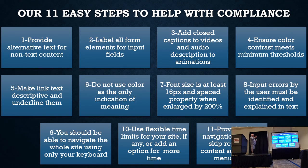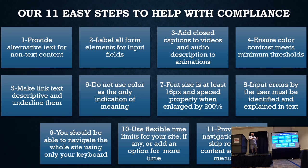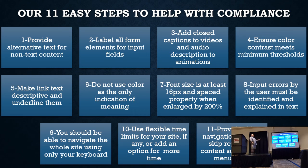Use closed captions on videos, audio descriptions, and animations — we talked about that. Ensure your color contrast meets minimum threshold — we talked about that: 4.5-to-1 or 3-to-1 for large text. Make your link text descriptive and underline them. This has to do with not making color the only means of conveying information. If an individual is colorblind and you've just got a blue letter to indicate a link, they're not going to know that's a link. So underline it — you want more than one way to convey that it's a link. Don't use color as the only indication of meaning. Font size at least 16 and spaced properly, scaling to 200%.